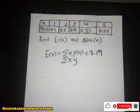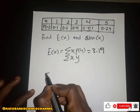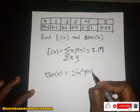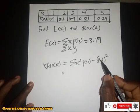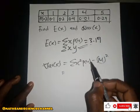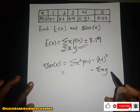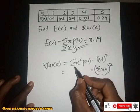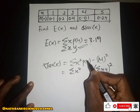Now for the variance: the formula is the summation of x² times P(x) minus μ squared, where μ is the expectancy we just found, which is 3.19. So the variance equals the summation of x²·y minus the square of the summation of x·y.